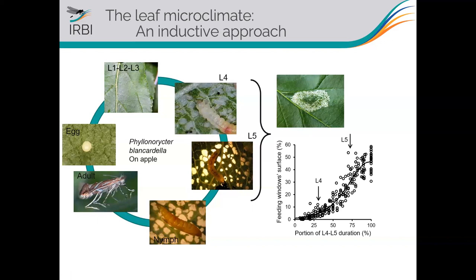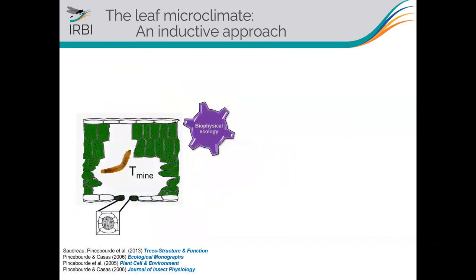The first question was how this mine works from a biophysical point of view. Here is a schematic cross-section of the mine with the upper and lower leaf surfaces — in apple, stomata occur at the lower surface — and you have the mine space with the feeding window and green intact patches. Like any object, the mine receives radiation from the environment and also absorbs and emits thermal infrared radiation. This is an important component in any heat budget.